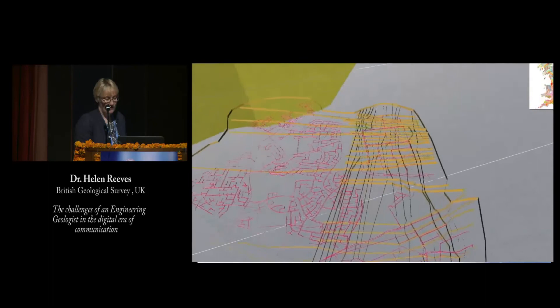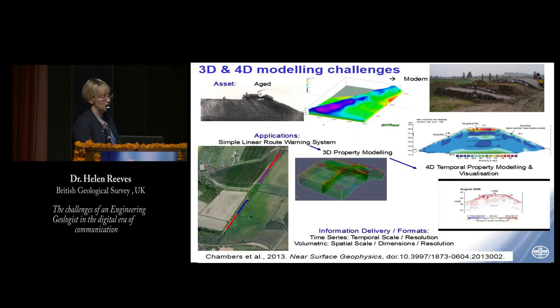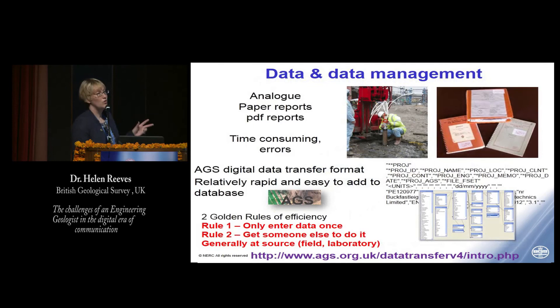Much more of what we're seeing is the visualization of both 3D property models into 4D temporal models, using geophysics as one of the tools to do this. This is a small example where electrical resistivity is being used to monitor an embankment and understand potential stability problems. The importance around this for asset owners is how this can help with understanding the future lifetime of that asset and help with asset maintenance. The important thing is data management — understanding how data is portrayed, monitored, and most importantly has a standard method of collection.